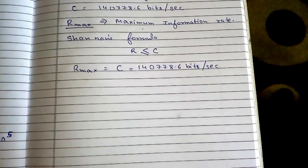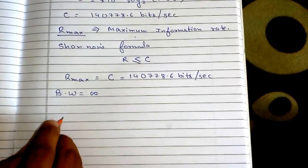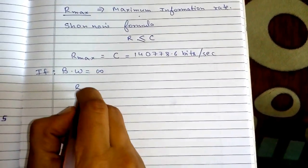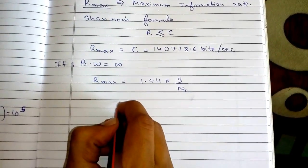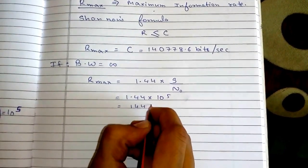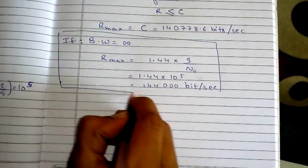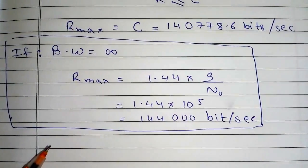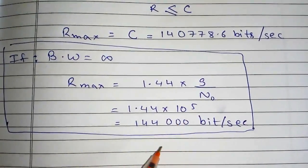What if my bandwidth is infinite? If bandwidth is infinite, the formula for maximum information rate changes. Then R_max = 1.44 × S/N₀, which in this case equals 1.44 × 10⁵ = 144,000 bits per second. This is a special case: if the question states bandwidth is infinite, use R_max = 1.44 × S/N₀. Maximum information rate will never be infinite.